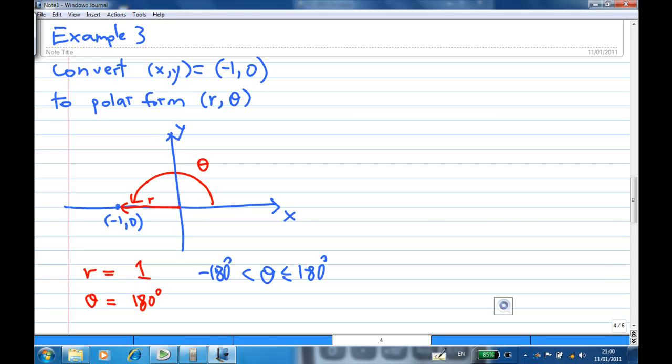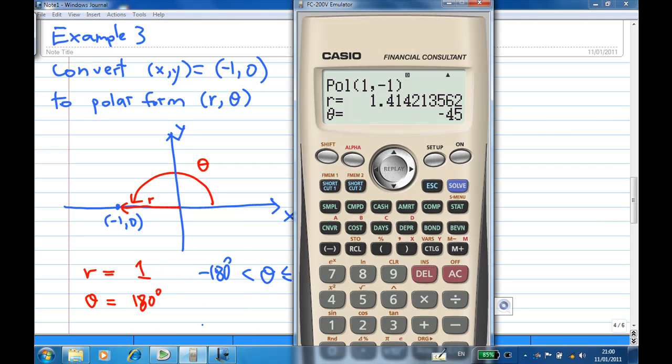Let's try to test the calculator. I want to change the coordinate of the point. This time, I'm going to put minus 1, 0. I have the point coordinate x equal to minus 1, y equal to 0.